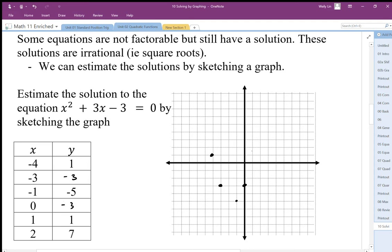1 over 1, 2 over 7. Notice that these coordinates are not very symmetrical, so it gives us a little bit harder time to figure it out. But if we take a look at the symmetrical points, we can kind of estimate that the vertex is somewhere at negative 1.5. When we sketch in the graph, our graph is going to look something like this.